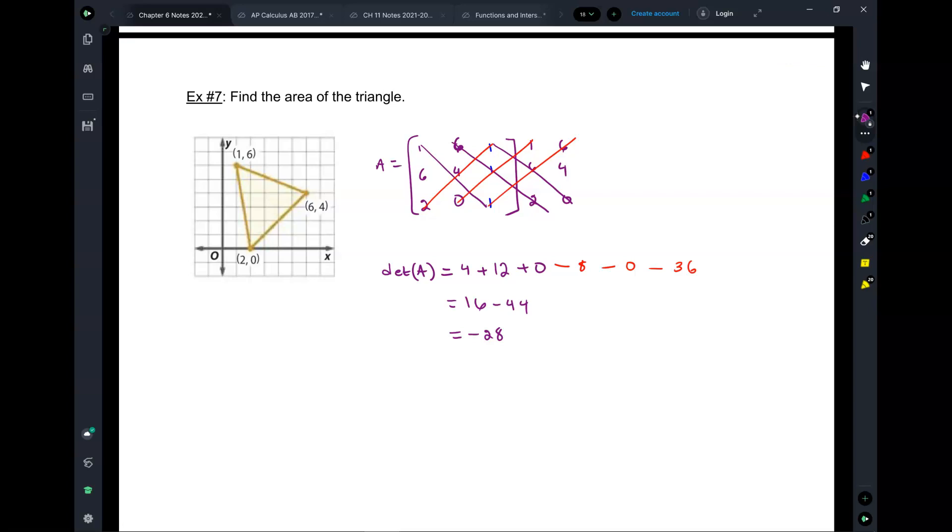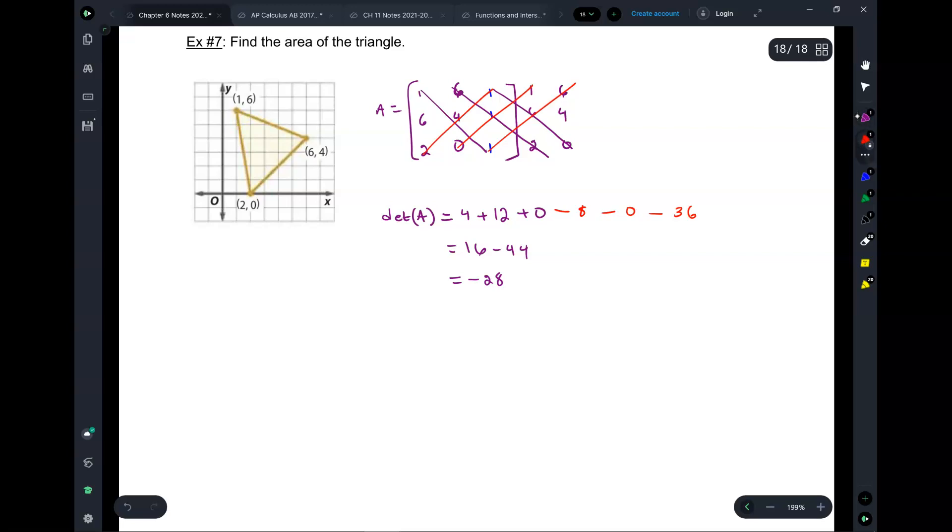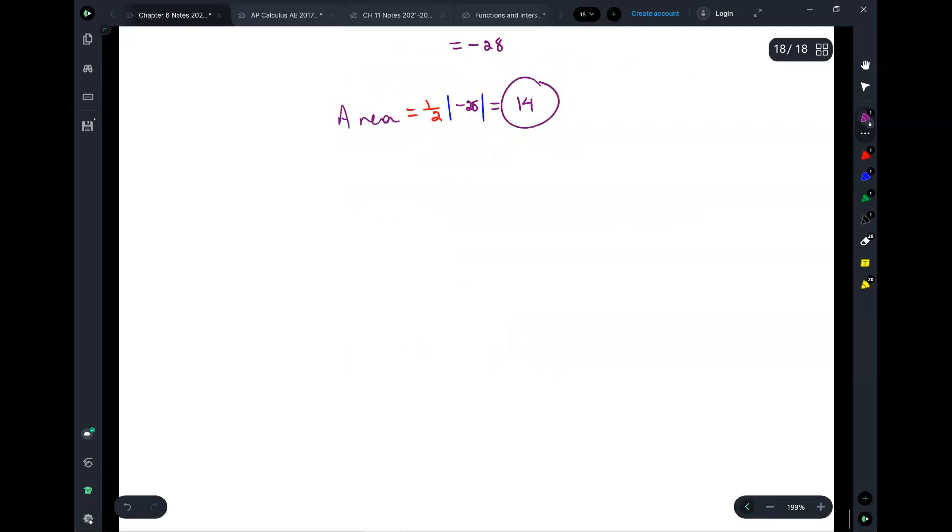Now, the area, however, this is the important thing, the area is always, not just for this problem, always. What's the formula for the area of a triangle? Just half times base times height. We never did the half, right? So we do it here. It's half times the determinant, but the determinant's negative, right? So it's always half times the absolute value of the determinant, which is 14. That's the area. 14 units squared. And that's the end of the chapter.